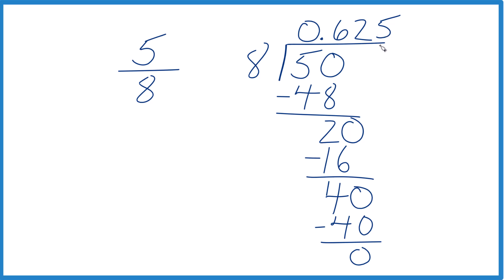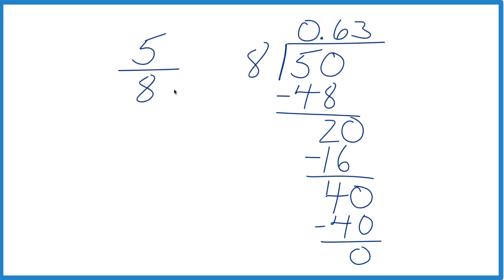If we wanted the hundredths place, we'd round up here, because this is 5. 5 and greater, we round up. So this goes to 3. And we'd have 5 eighths as a decimal to the hundredths place, 0.63.